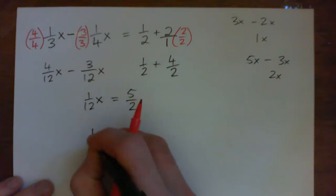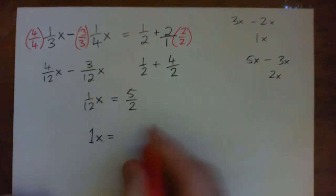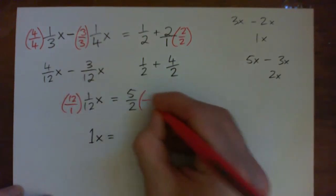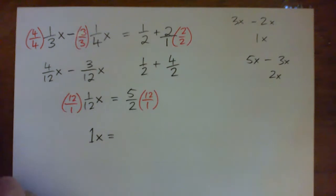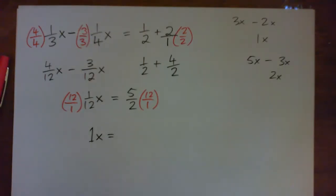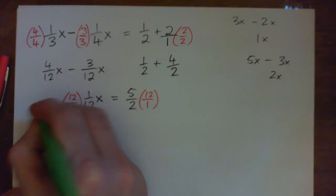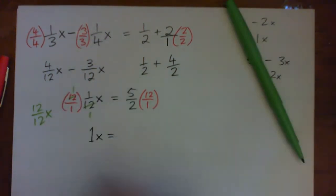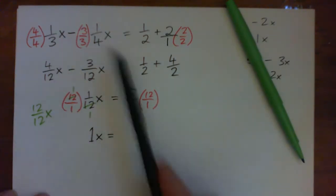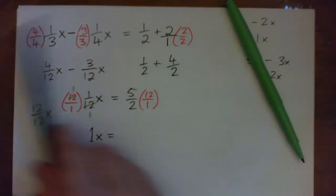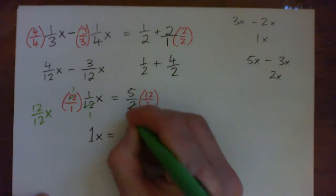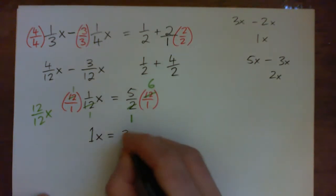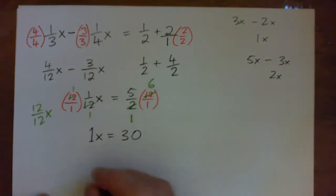Now to get x on its own we need to have one x equals something. Multiply the one twelfth by twelve over one on both sides. This becomes twelve over twelve x, or you can cross cancel the twelves. We get one x equals, now five times twelve is sixty, sixty over two is thirty. So one x equals thirty over one, or x equals thirty is the answer.